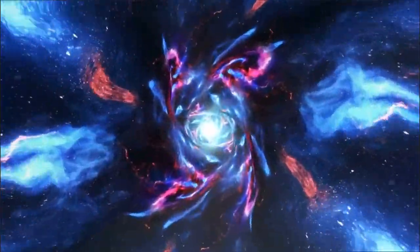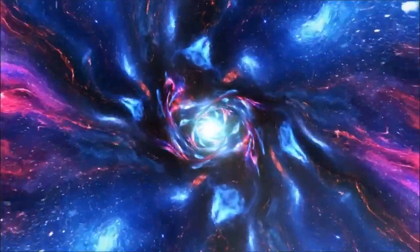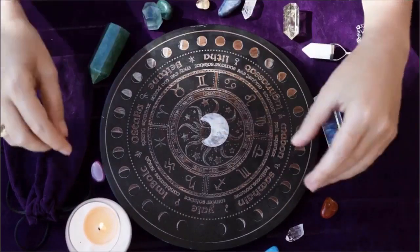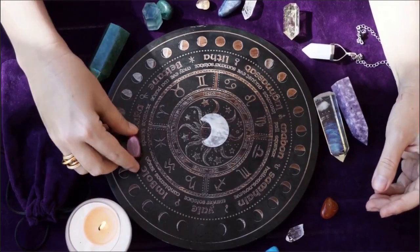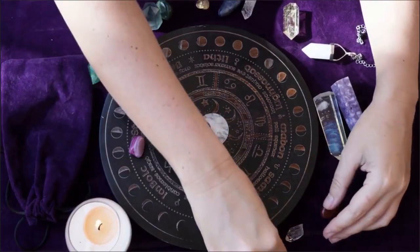October 25, waxing moon in Pisces. The eleventh lunar day continues in the morning. The twelfth lunar day begins at 16:42.